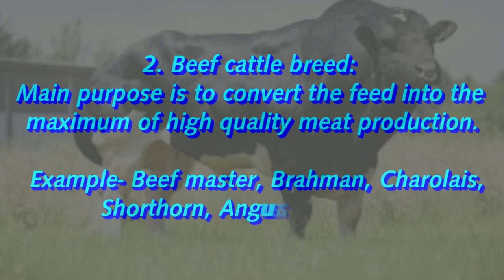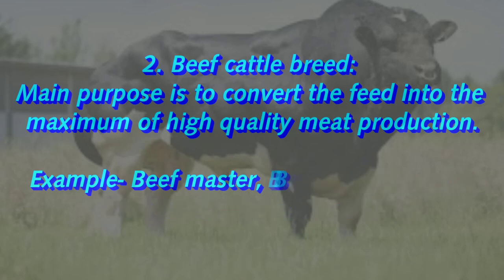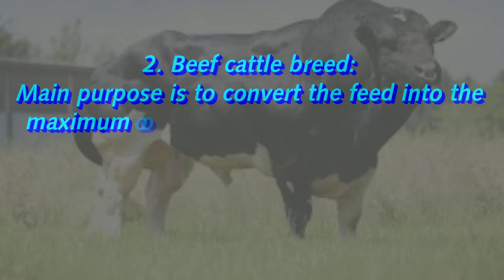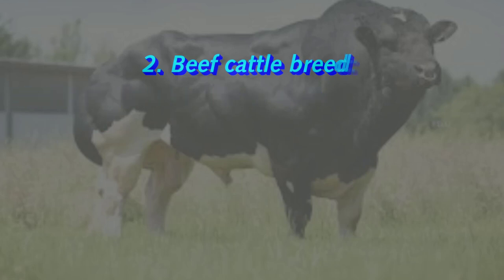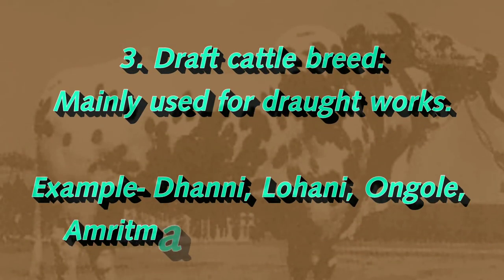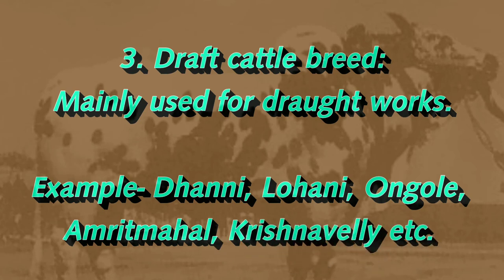Number two: beef cattle breed. The main purpose is to convert feed into the maximum amount of high quality meat production. Beef Master, Brahman, Charolais, Shorthorn, Angus, Devon, etc. are examples of beef cattle breed.